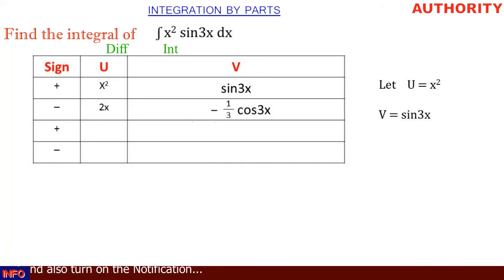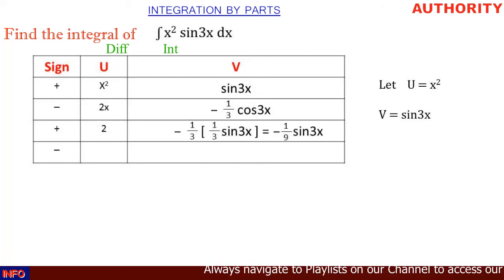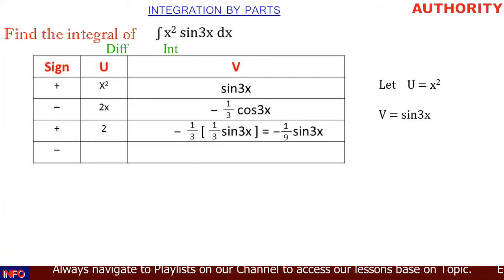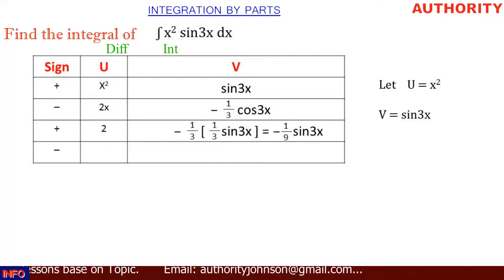Now differentiating 2x gives us 2. Under v, we have minus 1 over 3 cos 3x — taking the constant outside, the integral of cos 3x gives us 1 over 3 sine 3x. So 1 over 3 times minus 1 over 3 gives us minus 1 over 9 sine 3x.